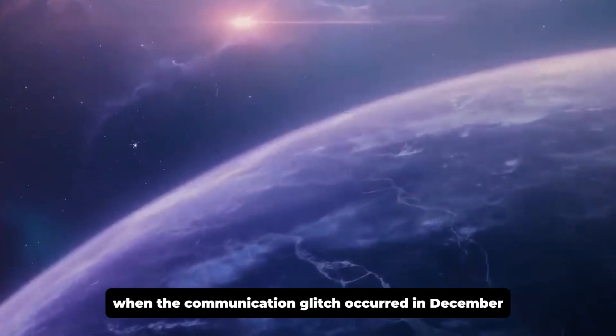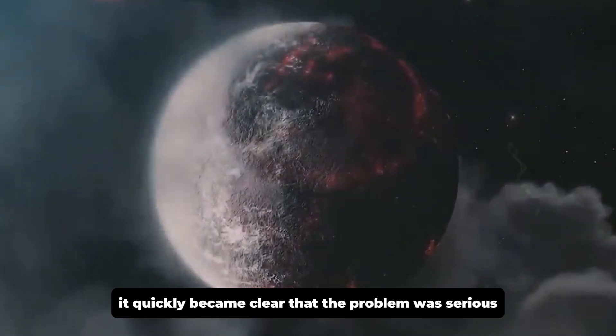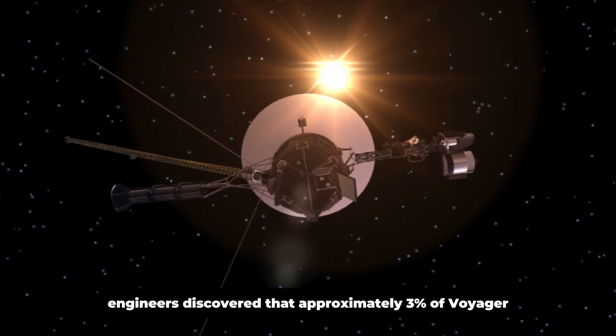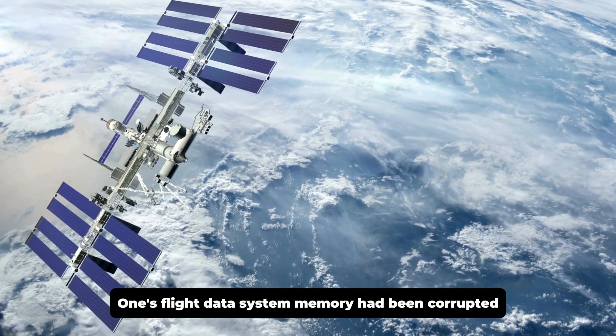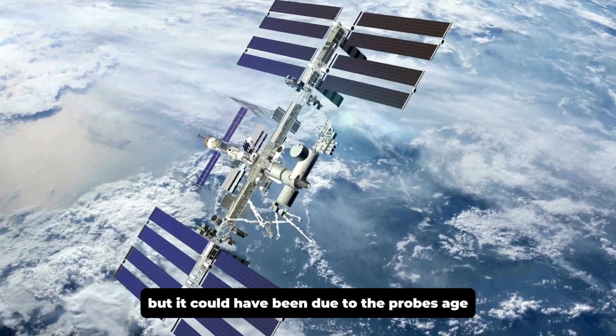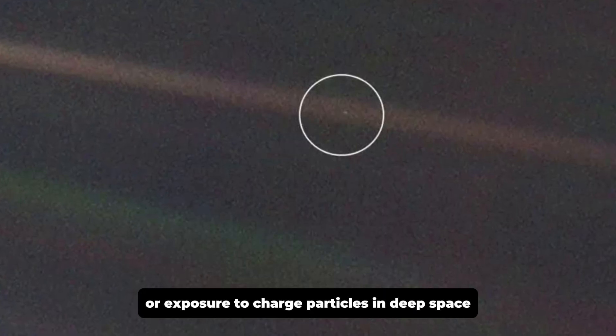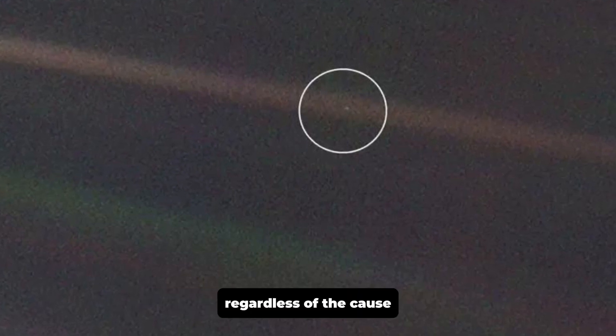When the communication glitch occurred in December, it quickly became clear that the problem was serious. Engineers discovered that approximately 3% of Voyager 1's flight data system memory had been corrupted. The exact cause of the issue remains unclear, but it could have been due to the probe's age or exposure to charged particles in deep space.